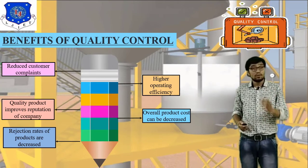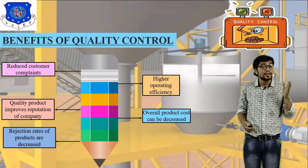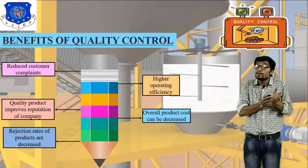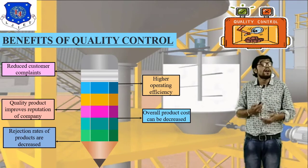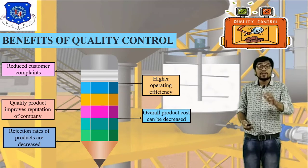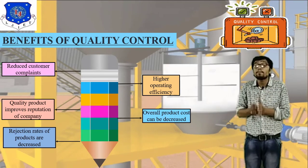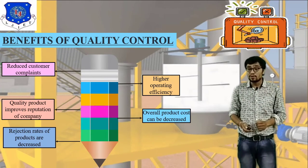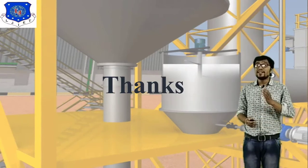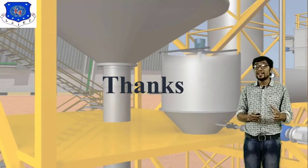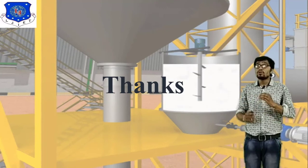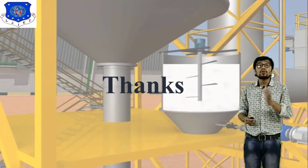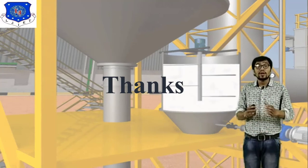To summarize: quality control is a combination of two words — quality, meaning a product that satisfies the customer need, and control, related to inspection. The key targets are to reduce customer complaints, achieve high operating efficiency, decrease rejection rates of products, and decrease overall production cost. These are the benefits of quality control. In the next session we will start a new topic: total quality management and quality circle. Thank you.